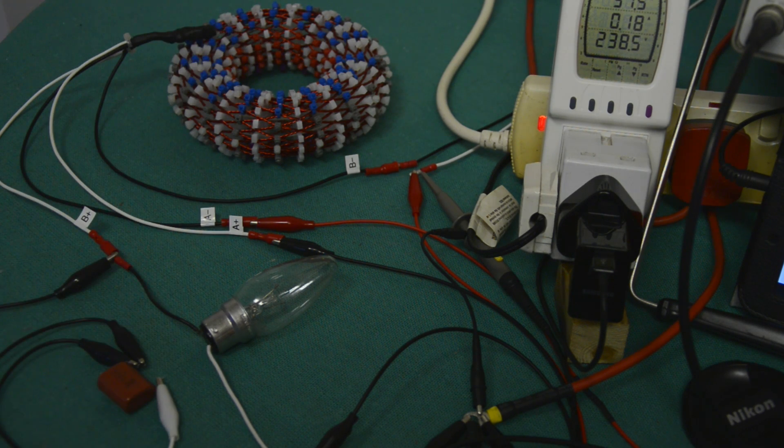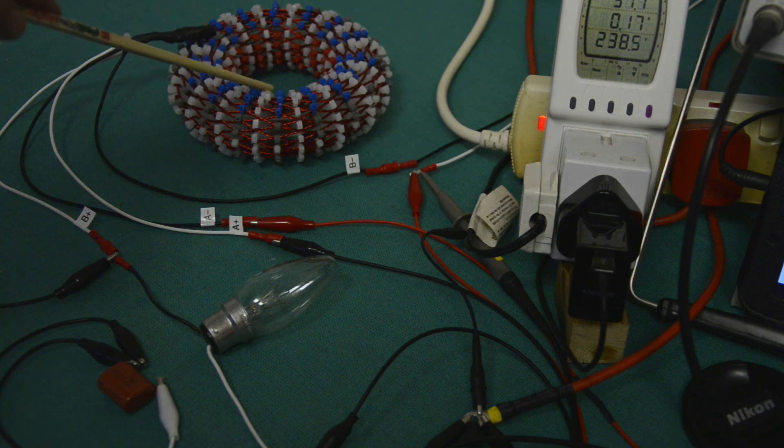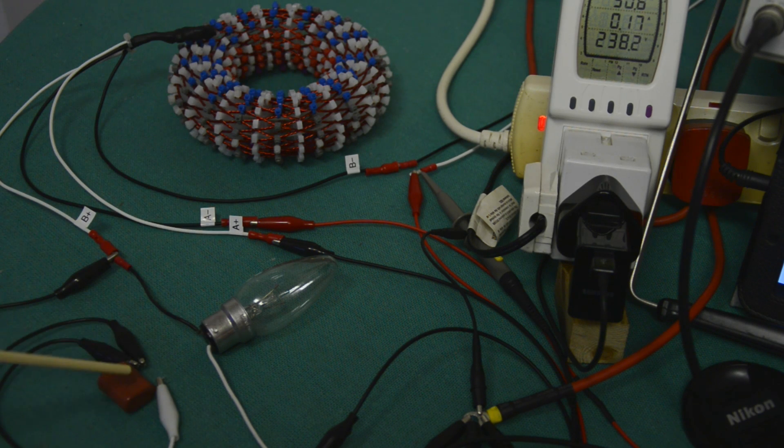So in short recap, the bulb is connected across terminals B plus and A minus of the coil. Connected in parallel to that light bulb is a 27 nanofarad capacitor.